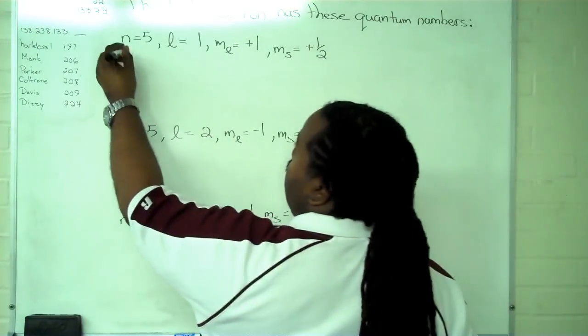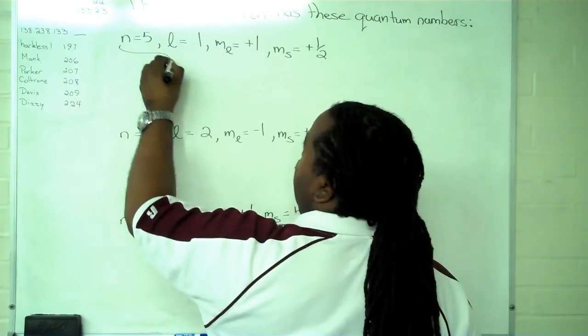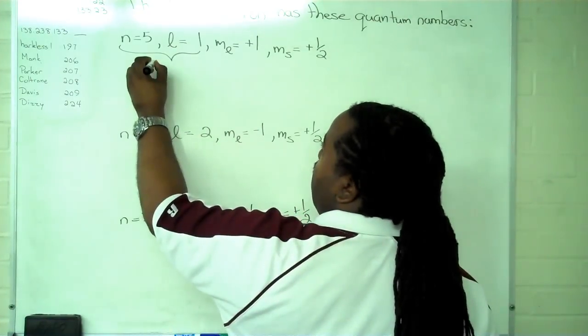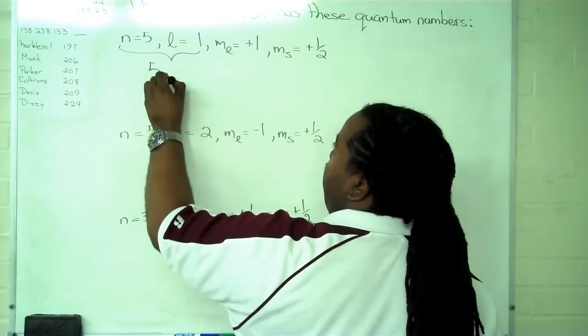So the first thing we want to do is identify the last orbital, and that last orbital can be identified by these two numbers, the principal and secondary, and this tells me that I am working with a 5p.